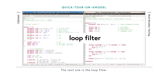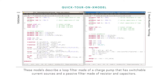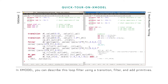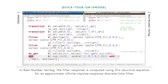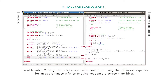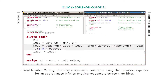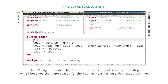The next one is the loop filter. These models describe a loop filter made of a charge pump that has switchable current sources and a passive filter made of resistors and capacitors. In X-Model, you can describe this loop filter using transition, filter, and add primitives. In Real Number Verilog, the filter response is computed using a recursive equation for an approximate infinite impulse response discrete-time filter. This indicates that the filter output is computed every time step, which becomes the major reason for Real Number Verilog's slow execution time.